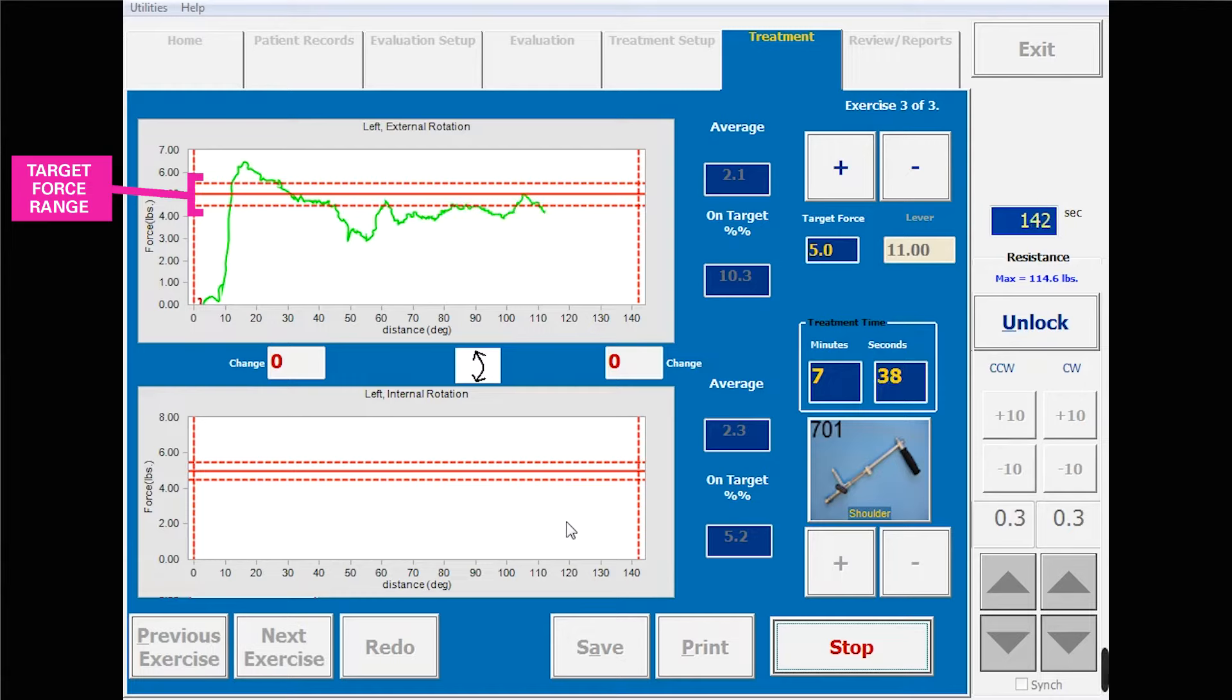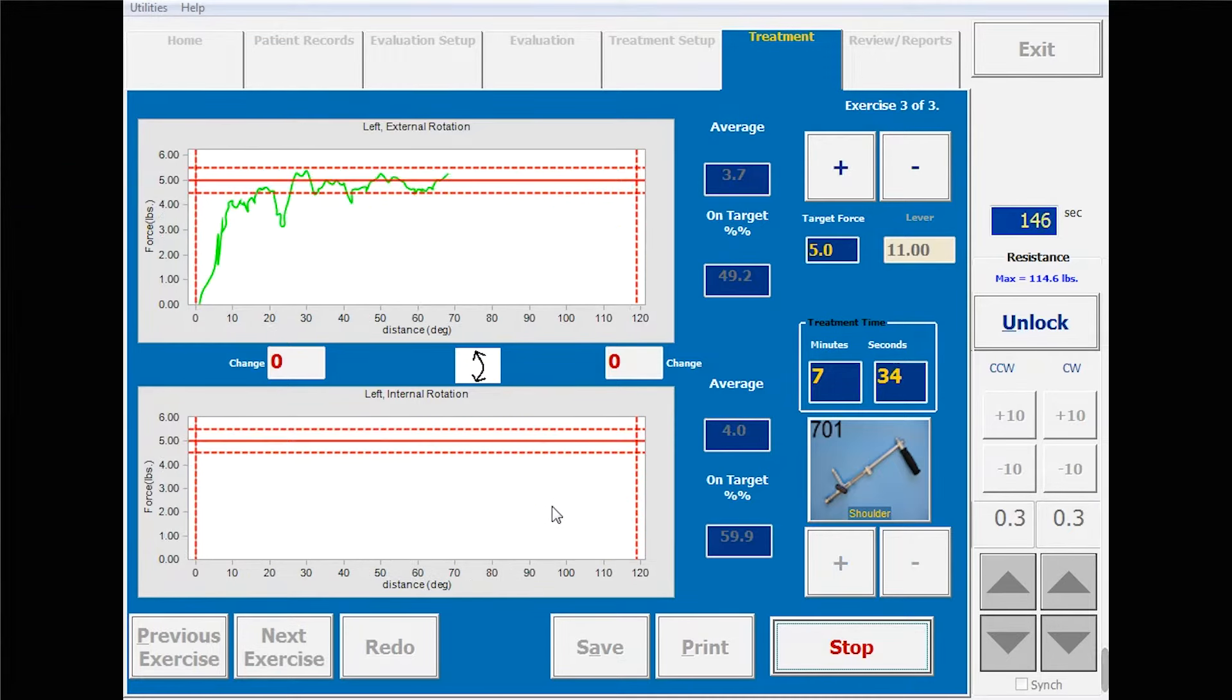The target force indicator is here on the screen so the client can maintain their force within the target zone. The green line shows when the client is pushing in the same direction as the primus. The red line shows when they're pushing against the direction of movement.